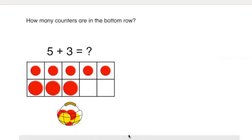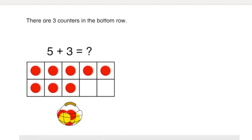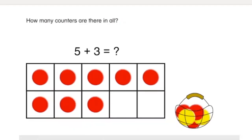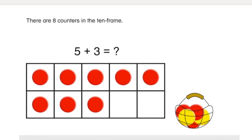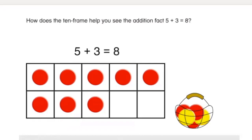How many counters are in the bottom row? How many counters are in the bottom row? That's right, there are three. There are three counters in the bottom row. How many counters are there in all? One, two, three, four, five, six, seven, eight. There are eight counters in the ten frame. So five and three more are eight.